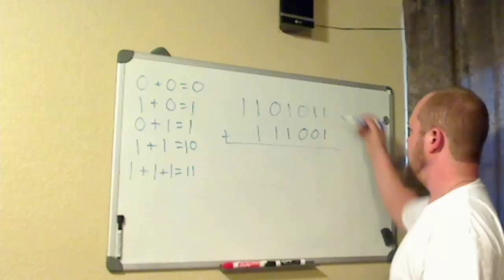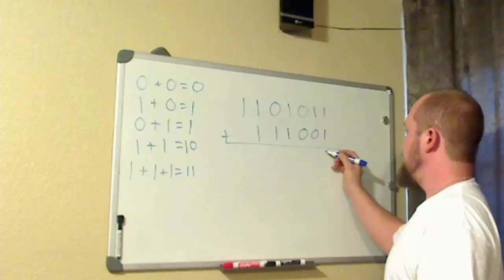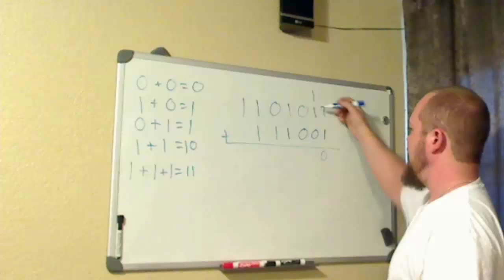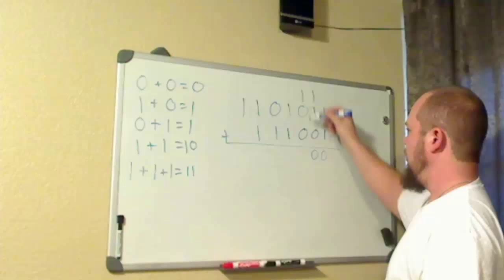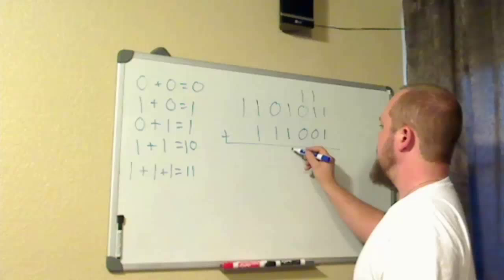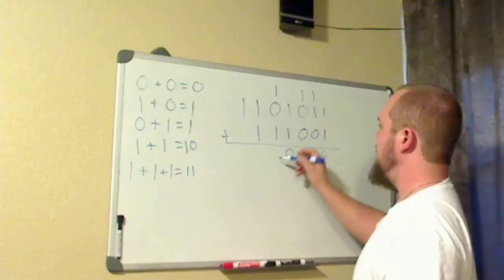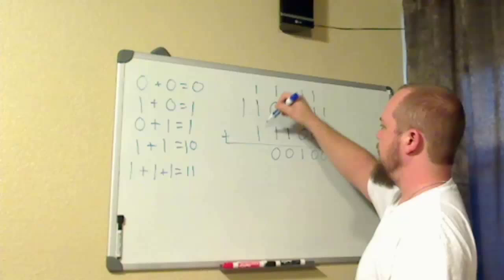Now, to begin adding this problem together, 1 plus 1, you see right here, is 2. So, we would leave the 0, we would carry the 1. 1 plus 1 is 1, 0. Leave the 0, carry the 1. 1 plus nothing is 1. 1 plus 1 is 1, 0. Carry the 1. 1 plus 1 is 1, 0. Carry the 1.